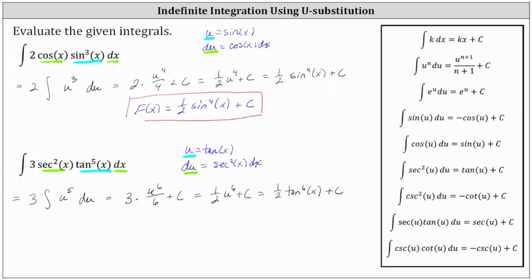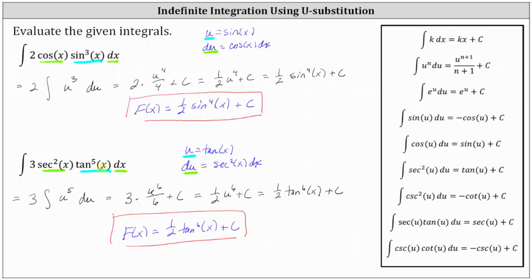So once again, we can identify this as big F of x, the antiderivative, equal to one-half times tangent to the sixth x plus c. This indicates it is the family of functions whose derivative is equal to the given integrand function. One nice thing about determining antiderivatives is we can always check them by differentiating big F of x to make sure we get the original integrand function. I hope you found this helpful.